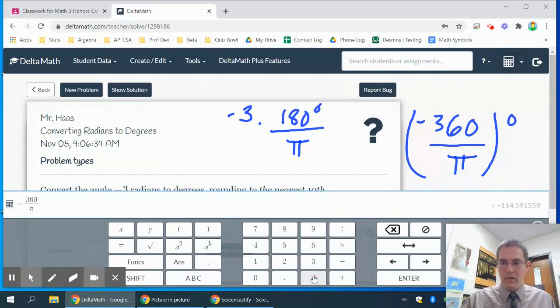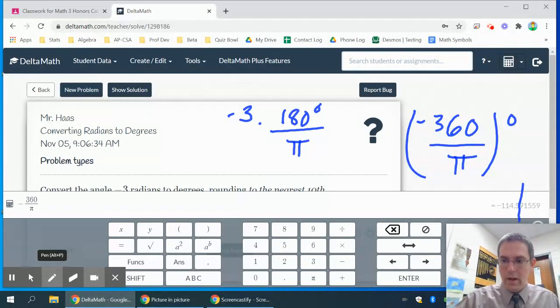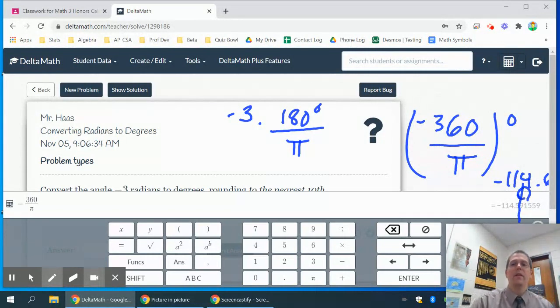So I'm just going to do negative 360 divided by π, and the π button is right there for you. So to the nearest tenth, I would need to say that that was equal to negative 114.6. So the 9 goes up, makes that round up to a 6. So negative 114.6 should be your answer.